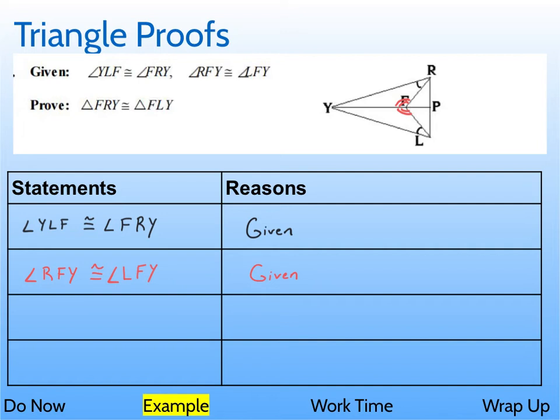Obviously, that's going to be congruent because it's the exact same line segment. So you could write side FY is congruent to side FY. And the reason is the reflexive property, because that just says that a line segment is congruent to itself.